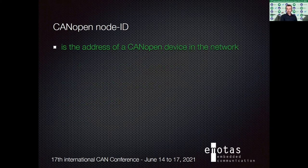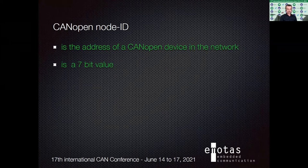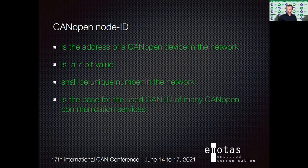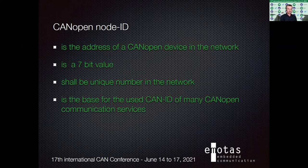A CAN open Node-ID is actually the address of a CAN open device in the network. It has to be unique in the network, and it is a 7-bit value, which means the Node-ID can only go up to the number 127 and starts at number one — so zero is forbidden. You can only have 127 devices in one network. The Node-ID must be unique because many of the services in CAN open use this Node-ID to create the CAN identifier for communication. For example, the error control mechanism uses the CAN ID 0x700 plus the Node-ID of the device sending the heartbeat.